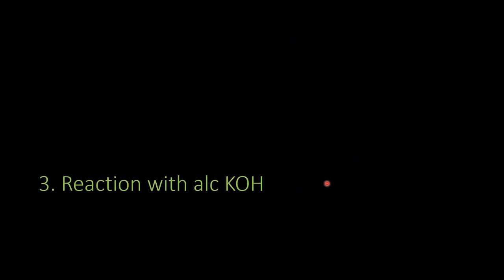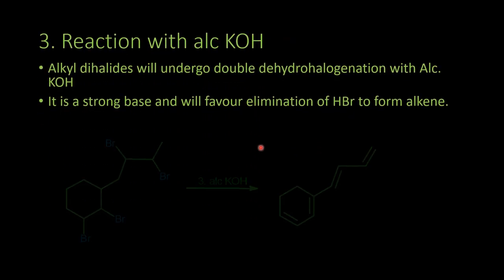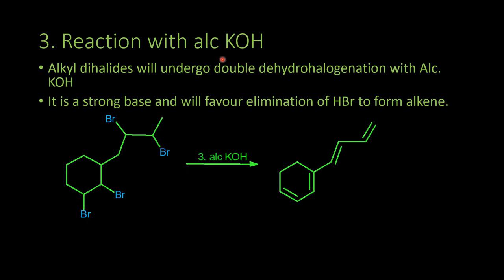The third reaction is with alcoholic KOH. Alcoholic KOH favors elimination — specifically beta elimination. In beta elimination, hydrogen atoms on the neighboring carbons attached to the carbon bearing the halogen can be removed. Hydrogen and halogen are removed to form a double bond, and this way four double bonds are formed, giving us a tetraene.